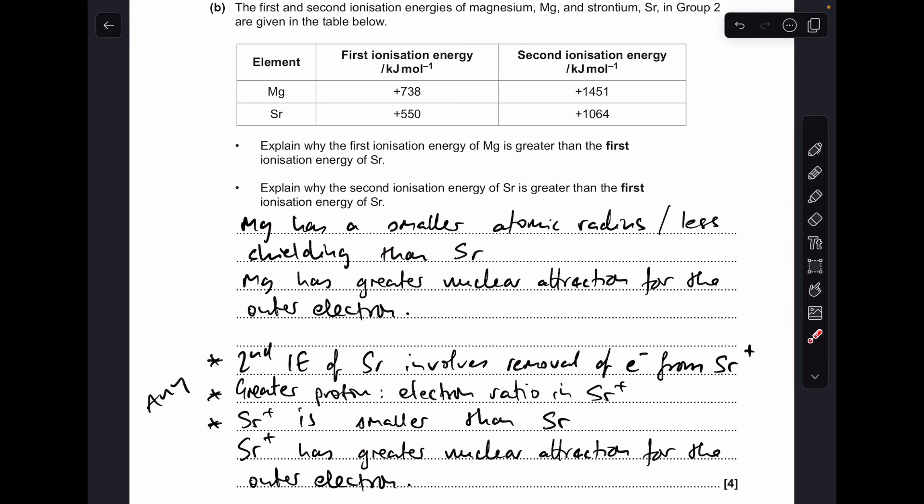Moving on to the second bullet point, to explain why the second ionization energy of strontium is greater than the first—any of these three is fine. The second ionization energy involves removal of an electron from a Sr+ ion, or you could say there's a greater proton-to-electron ratio in the Sr+ ion, or you could say Sr+ is smaller than strontium. Obviously, the second statement would be around nuclear attraction being greater in Sr+.